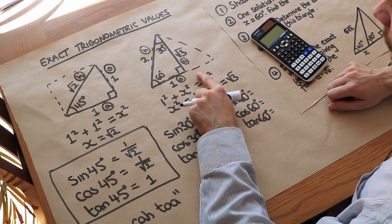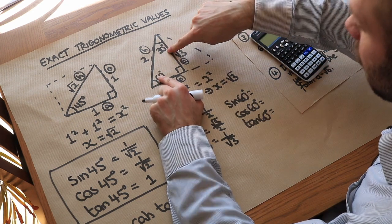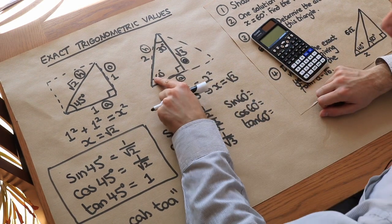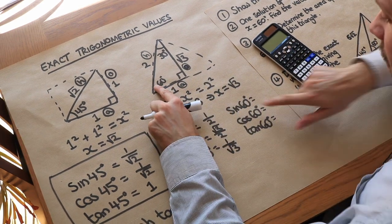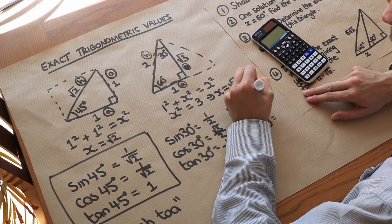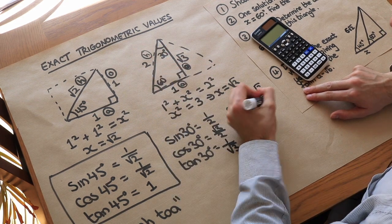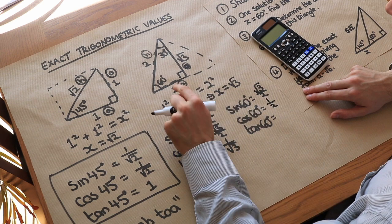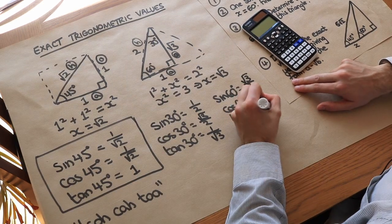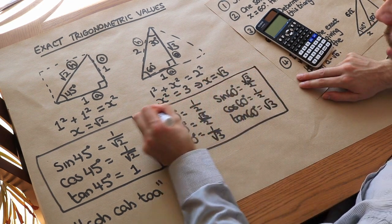To get sine of 60, we relabel the sides for the 60-degree angle. The side √3 is now the opposite (O) and the side 1 is now adjacent (A). So sine of 60 = √3/2. Cos of 60 = adjacent over hypotenuse = 1/2. Tan of 60 = opposite over adjacent = √3/1 = √3.